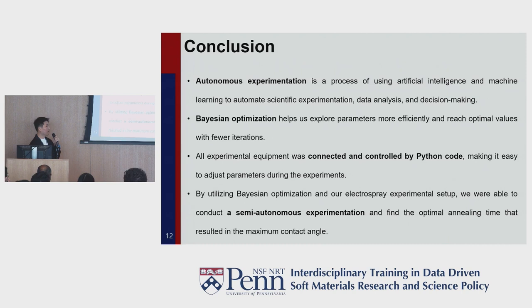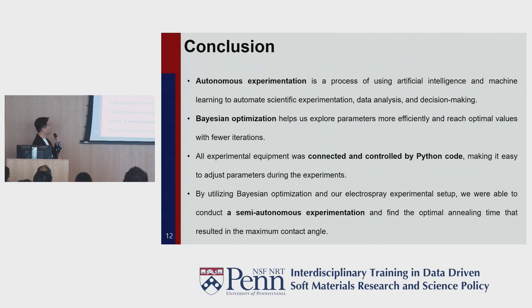Now, I want to summarize my work. Today, I briefly introduced autonomous experimentation, which is a process using AI and machine learning algorithms. Bayesian optimization helped us explore parameters more efficiently with fewer iterations. All experimental equipment was connected and controlled by Python code. Finally, we demonstrated the toy problem using semi-autonomous experimentation. This is the end of my presentation. Thank you for listening.